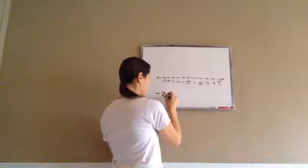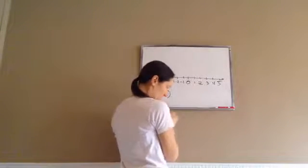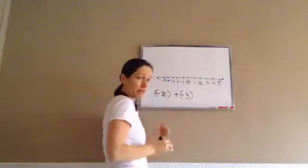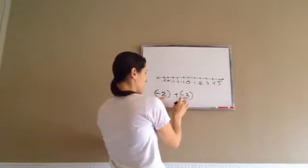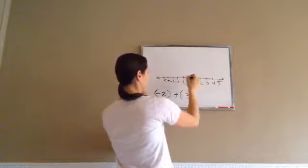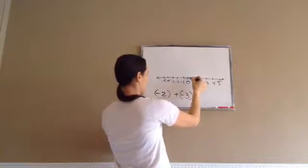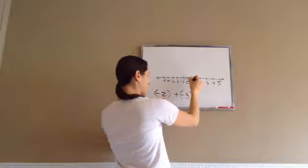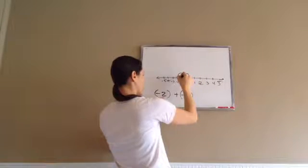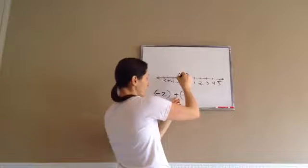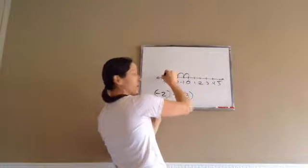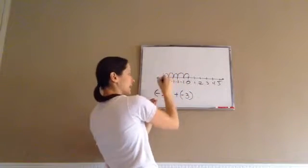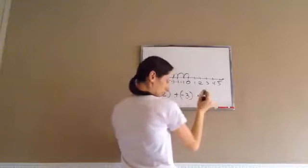For example, if I did negative 2 — and they're going to put these in parentheses just to help us — plus a negative 3, watch what happens. Remember, negatives are always going to the left, and positives are always going to the right. So 0 is my starting spot. If I'm going negative 2 to the left: 1, 2. Plus a negative 3 to the left again: 1, 2, 3. What do I end up at? Negative 5.